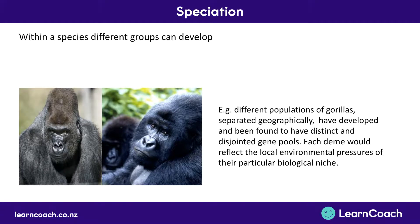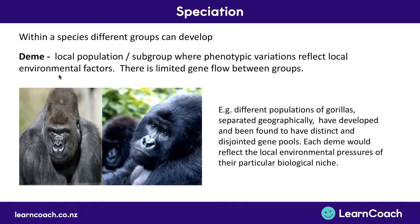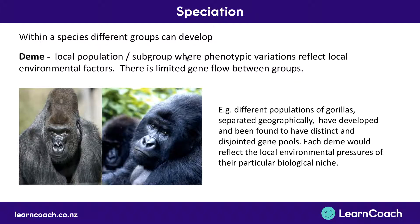The word you need to learn is 'deme'. This is a local population or a small subgroup of some species where their phenotype - their physical characteristics - reflect the local environment. That's like the lowland gorilla reflecting the environment where they have more grassland to walk around on, and the mountain gorilla being better in trees. Because they have these two separate environments, they develop separately and there's limited gene flow between the two groups.